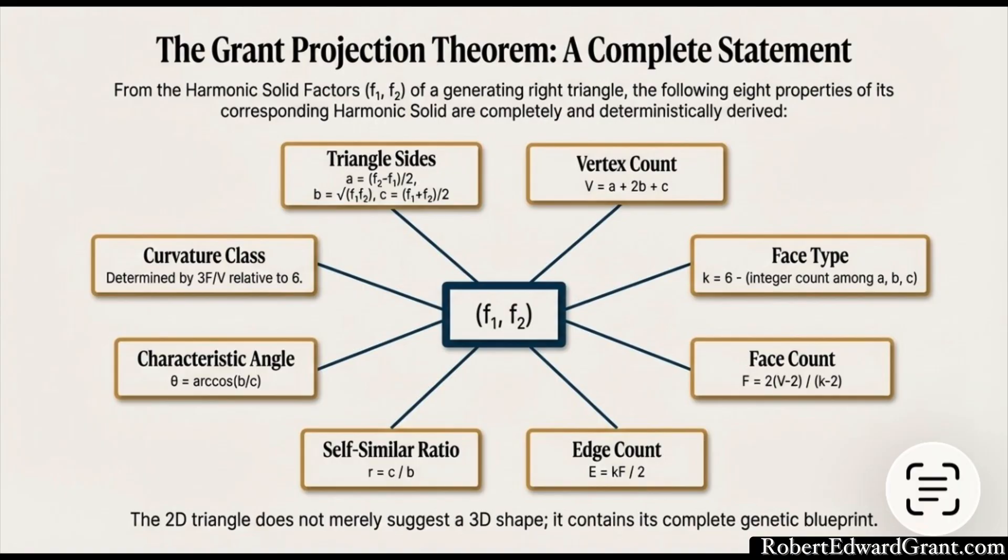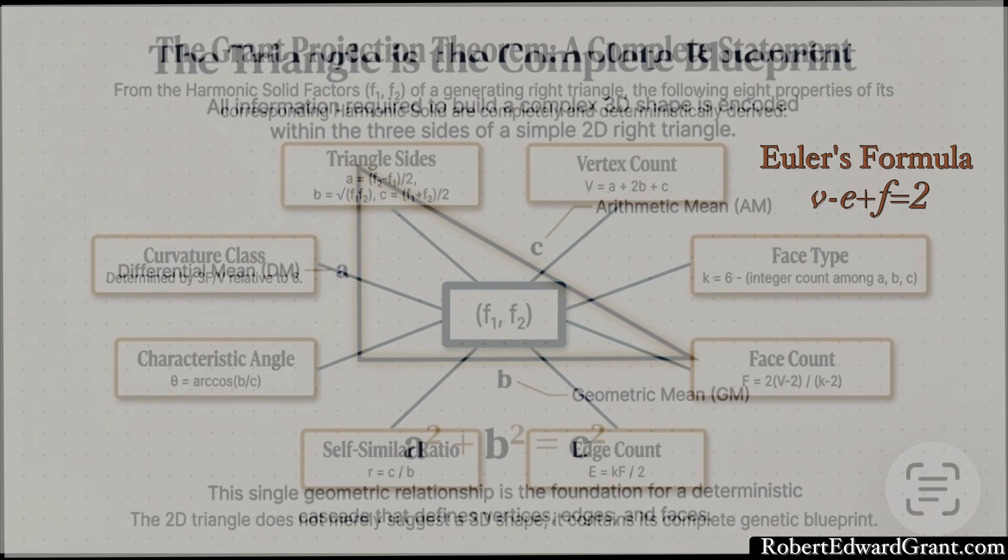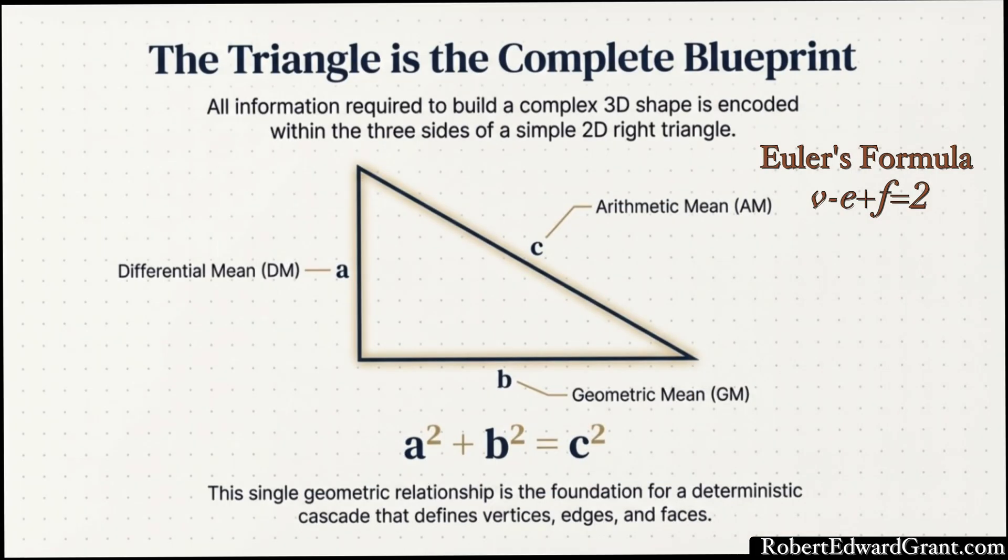And here's the absolute kicker: Euler's formula, that bedrock of topology, the idea that vertices minus edges plus faces must equal 2, that's not some external rule you have to check at the end. The generation process described by this triangle automatically forces the final shape to be topologically valid. It's an intrinsic property, baked in from the start.